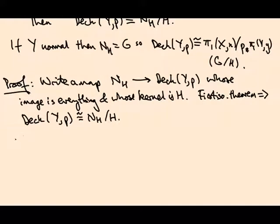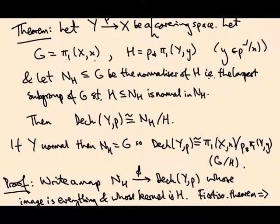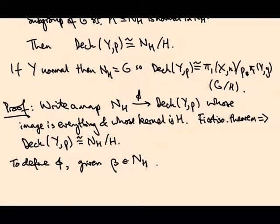So how do we define this map? We call it φ. To define φ, given some element β of the normalizer of H—in other words, an element of the fundamental group of X which happens to live in this normalizer—we can conjugate by it and we don't change anything. That's what it means to be the normalizer.